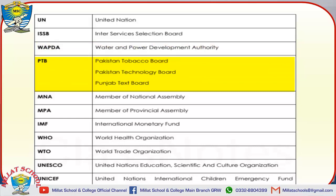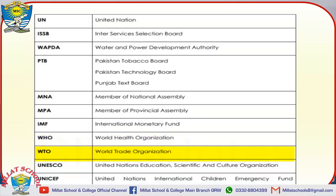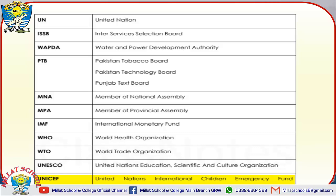Continuing with abbreviations: PTB — Pakistan Tobacco Board / Pakistan Technology Board / Punjab Text Board. MNA — Member of National Assembly. MPA — Member of Provincial Assembly. IMF — International Monetary Fund. WHO — World Health Organization. WTO — World Trade Organization. UNESCO — United Nations Educational, Scientific and Cultural Organization. UNICEF — United Nations International Children's Emergency Fund.